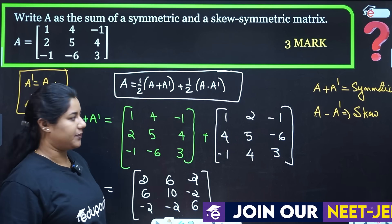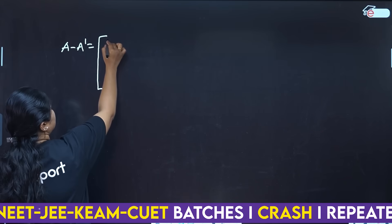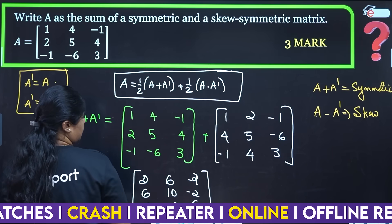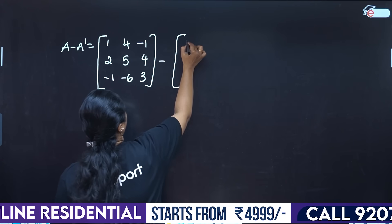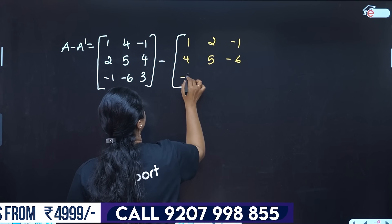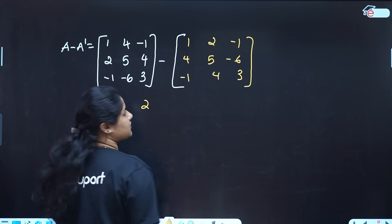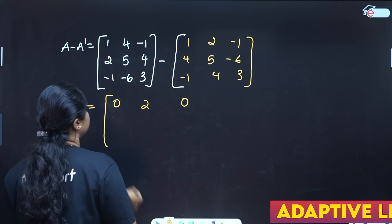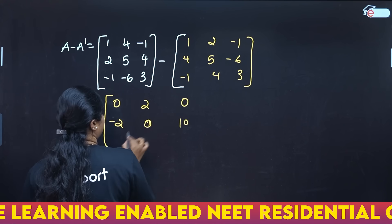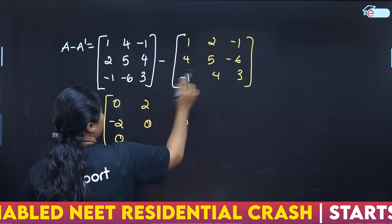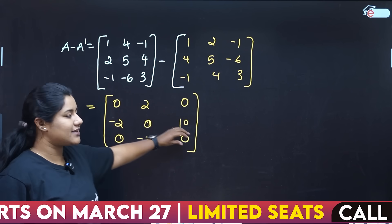Now we compute A minus A-transpose. Taking A minus its transpose, we subtract corresponding elements: 0, 2, minus 2; 2, 0, 5; minus 5, 0, 10; minus 10, 0. Note that for the skew-symmetric matrix, all diagonal entries are equal to 0.